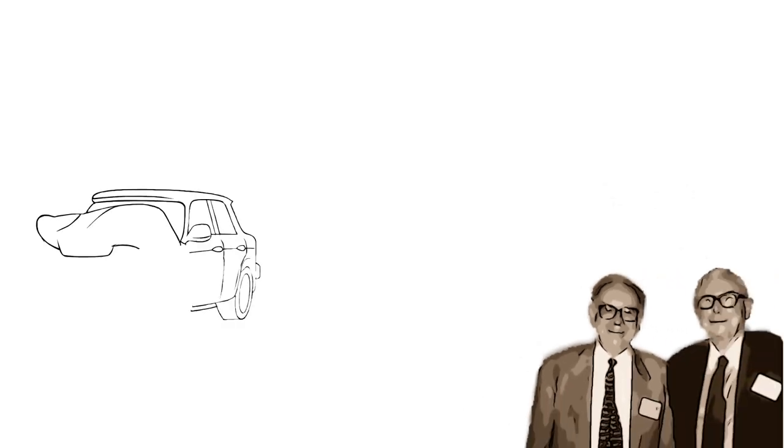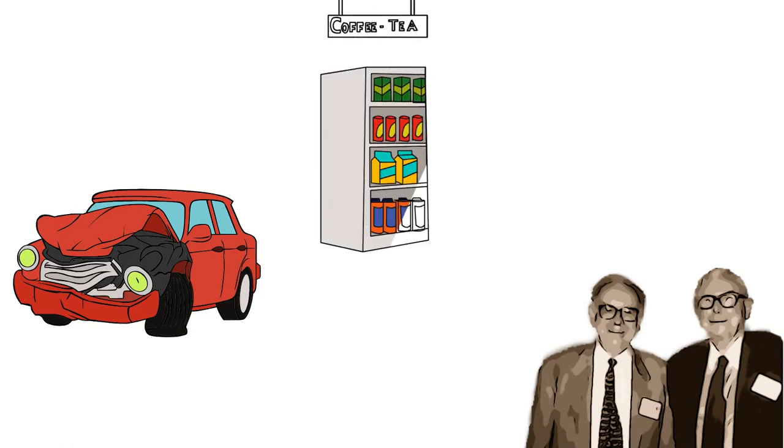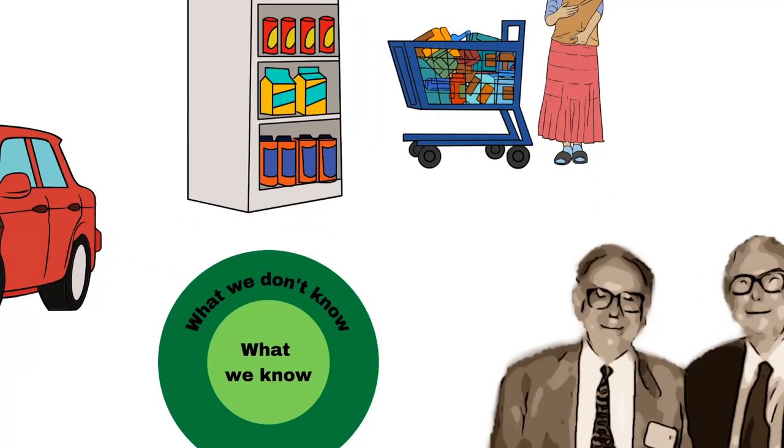When Warren Buffett first started out in business decades ago, he soon realized that the insurance industry was something he intuitively understood. He also admitted that he did not particularly understand the retail industry, even though he spent some time working in it when he was young. Much of his success can probably be attributed to the fact that he recognized early on what made sense to him and focused on that.